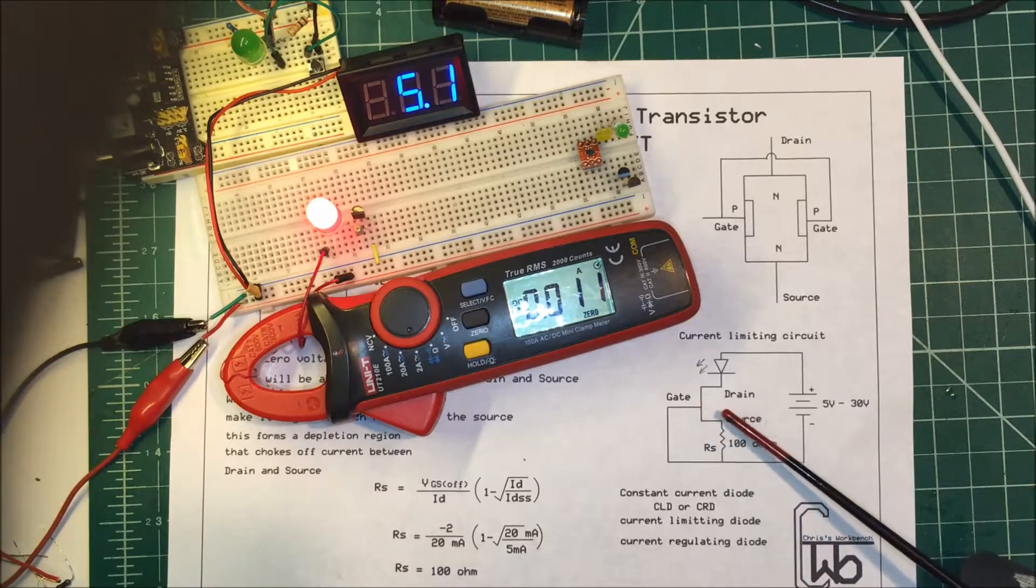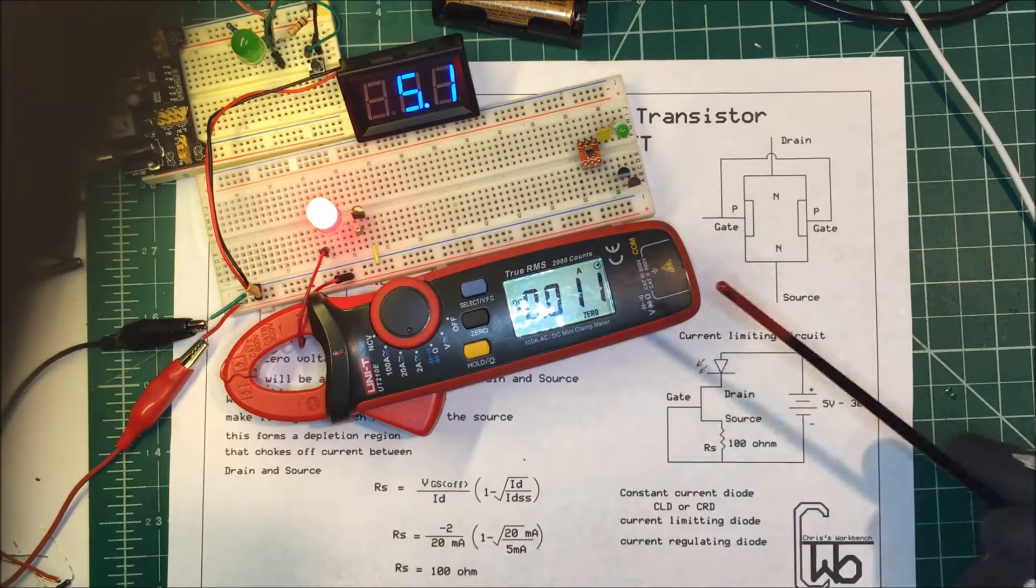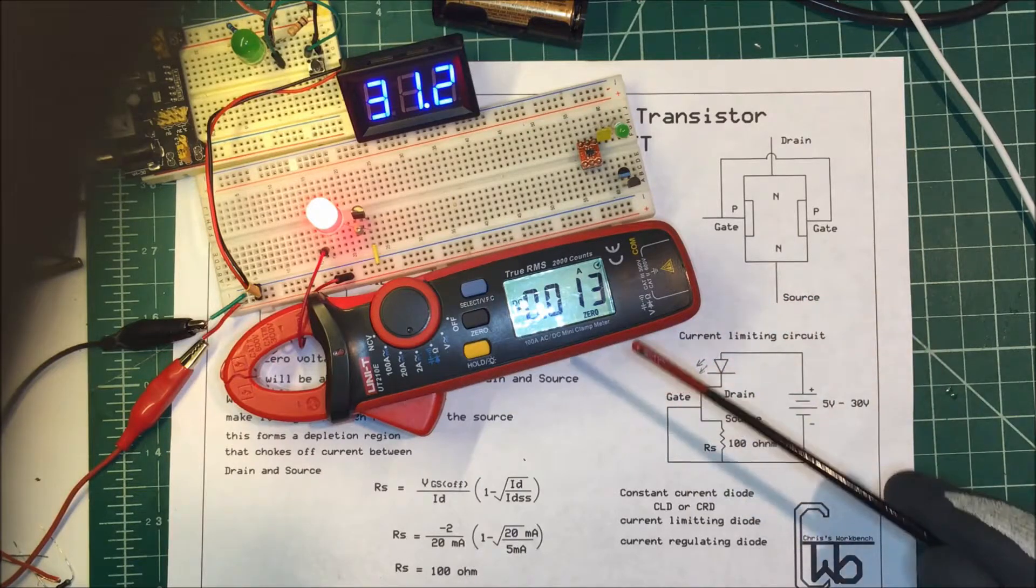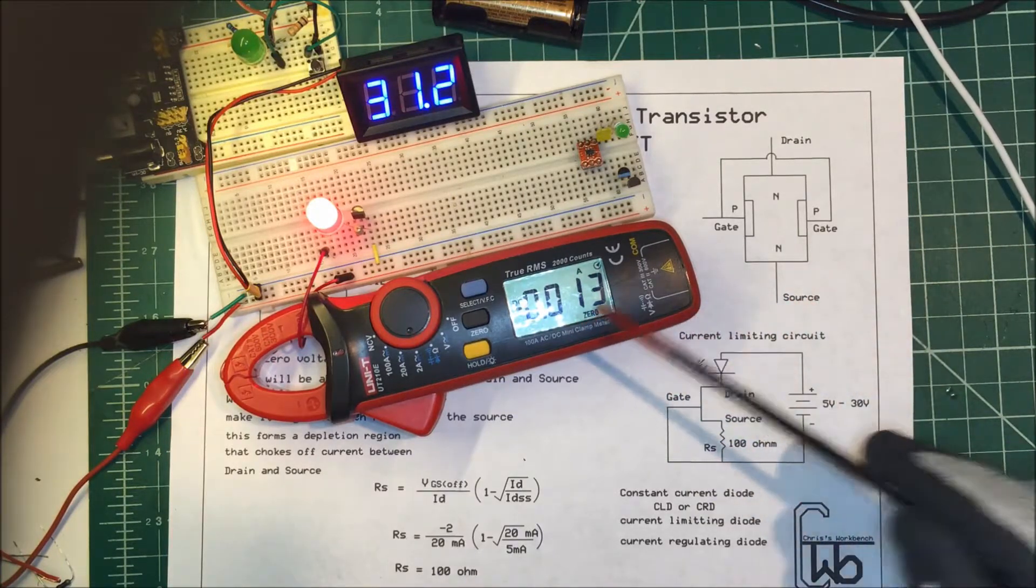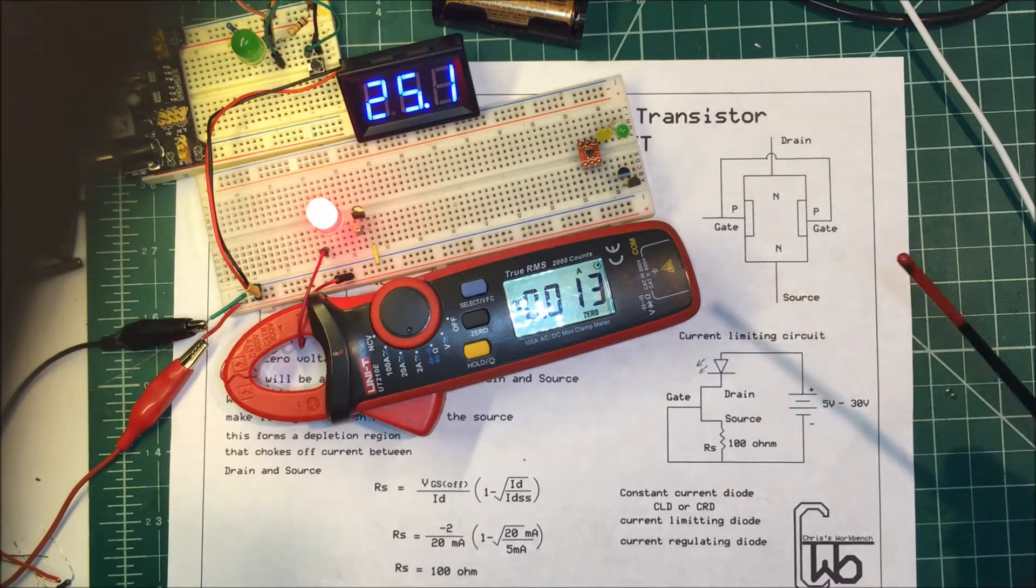I happen to have these JFETs. I'm just going to make up my own little unit here. It works good from 5 volts to 30 volts. I have the same amount of current flowing through the unit there. It's good.